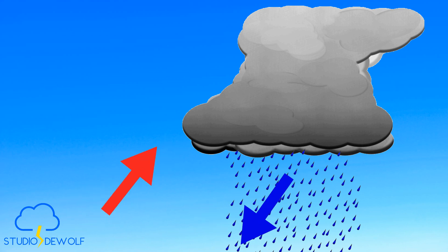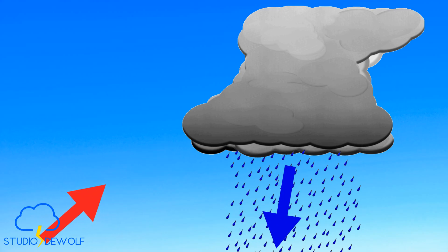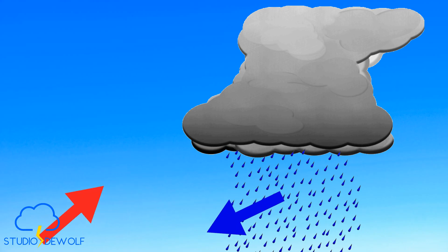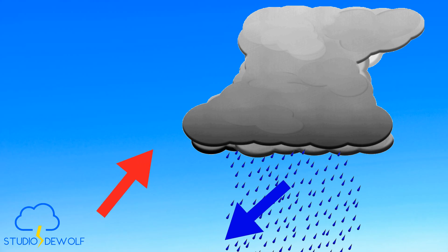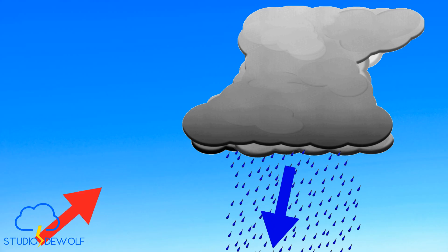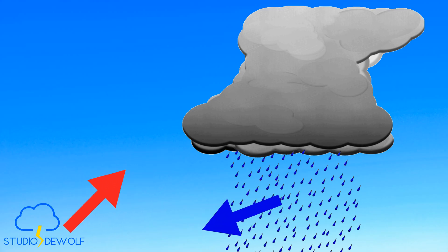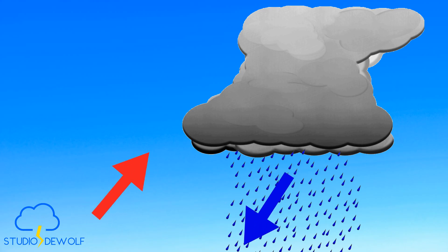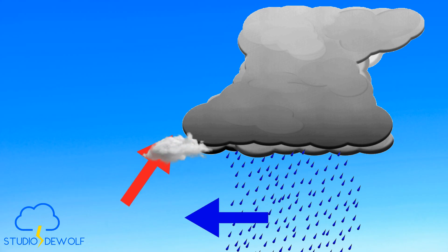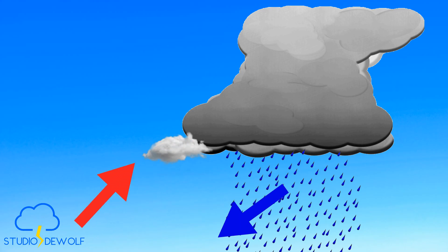When that cooler air reaches the ground, it spreads rapidly outward and collides with the warm, moist air still being pulled into the storm cell. This collision creates a sharp boundary in the atmosphere — the warm air is forced upward, condenses, and forms a horizontal band of cloud: the shelf cloud.